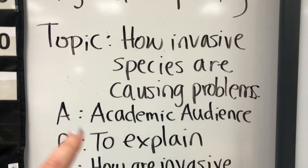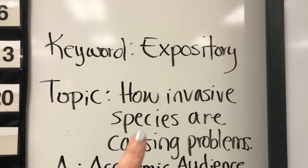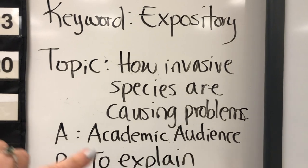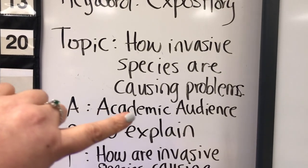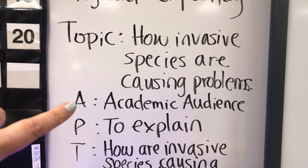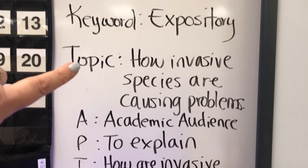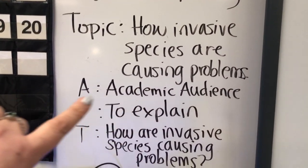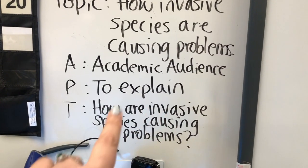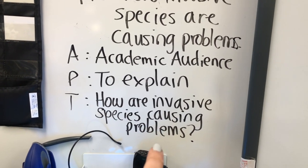We found out from analyzing the prompt that the keyword is "expository," so our purpose becomes to explain. Our topic is how invasive species are causing problems. Our audience is an academic audience — could be a teacher, anyone in academia. The purpose is connected to our keyword, which is to explain. And the task is connected to the topic but written in the form of a question: how are invasive species causing problems?